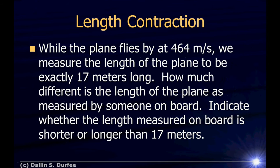Length contraction. When a plane flies by at 646 meters per second, we measure the length of the plane to be exactly 17 meters long. To measure the proper length, we need to be in a reference frame where the object is not moving. In our reference frame the plane is moving, but in the reference frame of someone on board, the plane is not moving — it's the earth that's moving. So they measure the proper length, whereas we measure the length-contracted length.